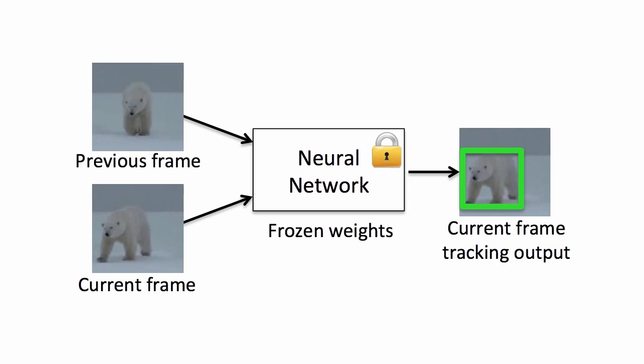GoTurn is based on a simple neural network that takes as input two cropped images from the current frame and the previous frame of a video. The previous cropped frame is centered around the object and the current frame is cropped using the same bounding box. The goal is to find the bounding box for the current frame.